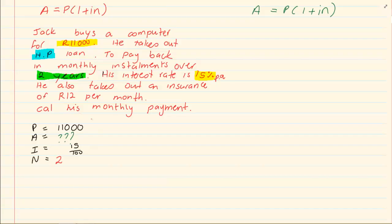So we first write down our P, A, I, N, we substitute what we have then we go to our formula. In our formula we are putting in all the information that we have.